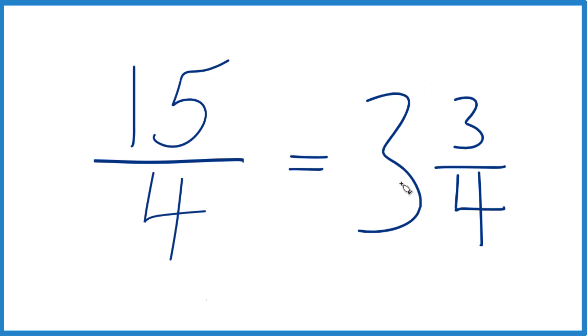And we can check that. 3 times 4, that's 12, 12 plus 3, 15, and we're just keeping this denominator the same.